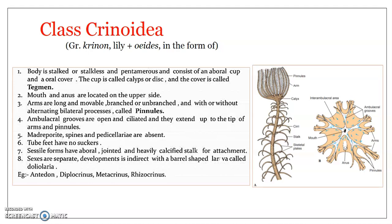The main body part is a body disc, called the calyx, covered with a leathery skin known as the tegment, which contains calcareous plates. The epidermis is poorly developed. Usually five flexible arms emerge from the calyx, each branching to form many more arms. Each branch is provided with lateral pinnules arranged like barbs on a feather. The calyx and arms together form what is referred to as the crown.